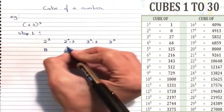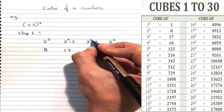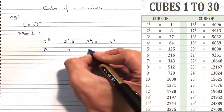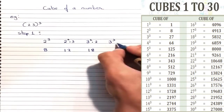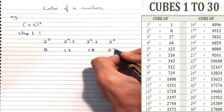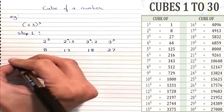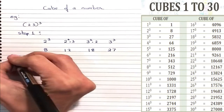So we have 8, then 2 squared is 4 into 3 is 12, then 3 squared is 9 into 2 is 18, and 3 cube is 27.